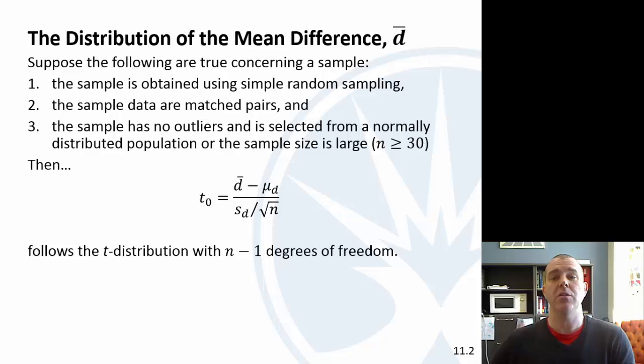This is the distribution of the mean difference, and you should notice something. This looks kind of familiar. This is a t-distribution, where instead of X bar minus mu over S over square root of N, now it's D bar minus μ_d over S_d over square root of N. Very similar to the distribution of X bar.